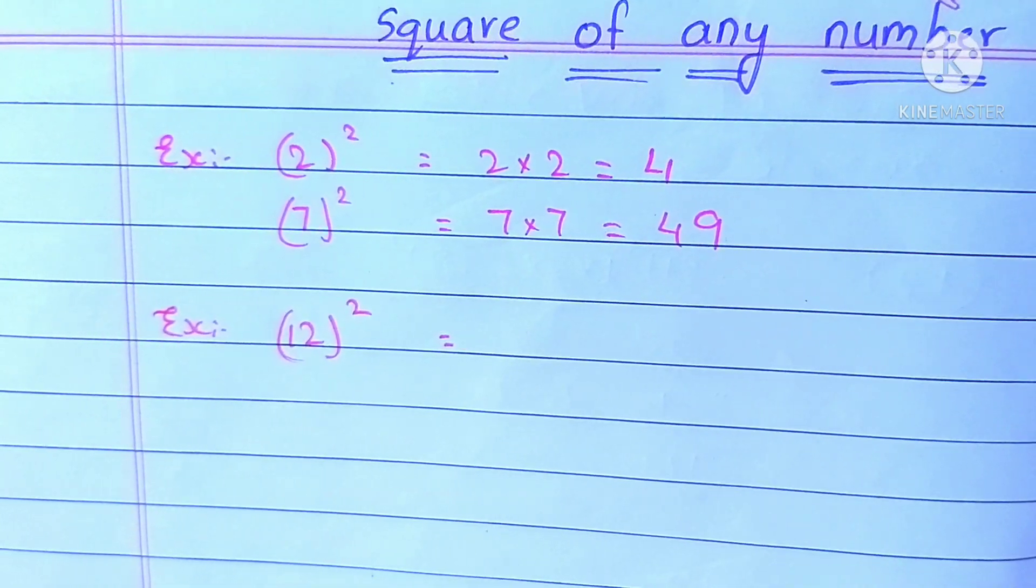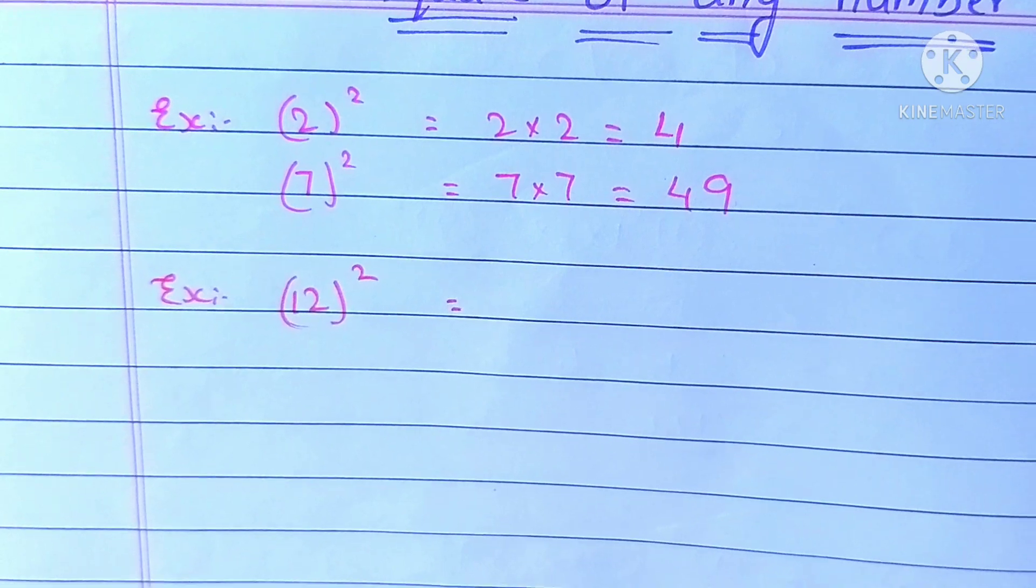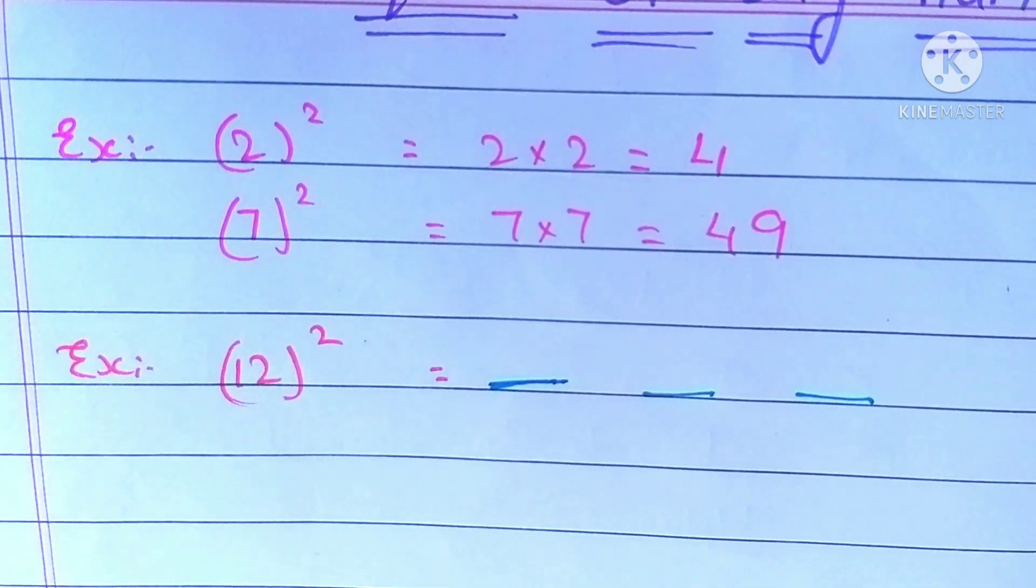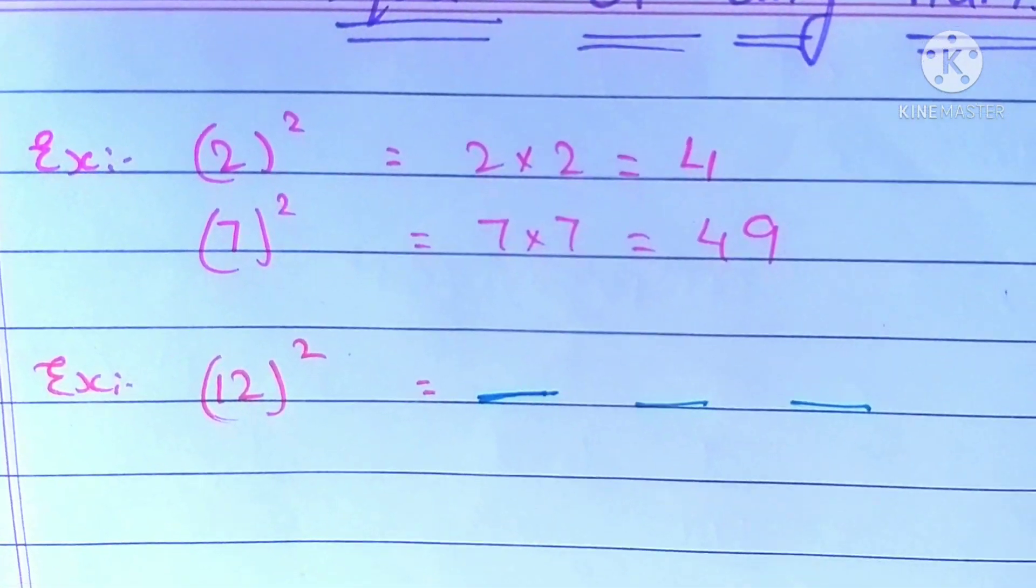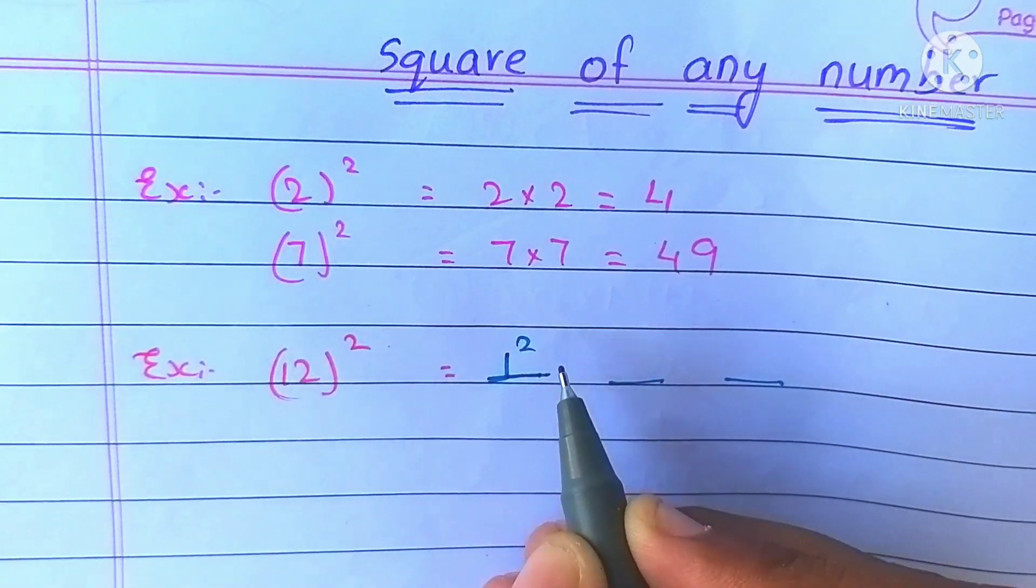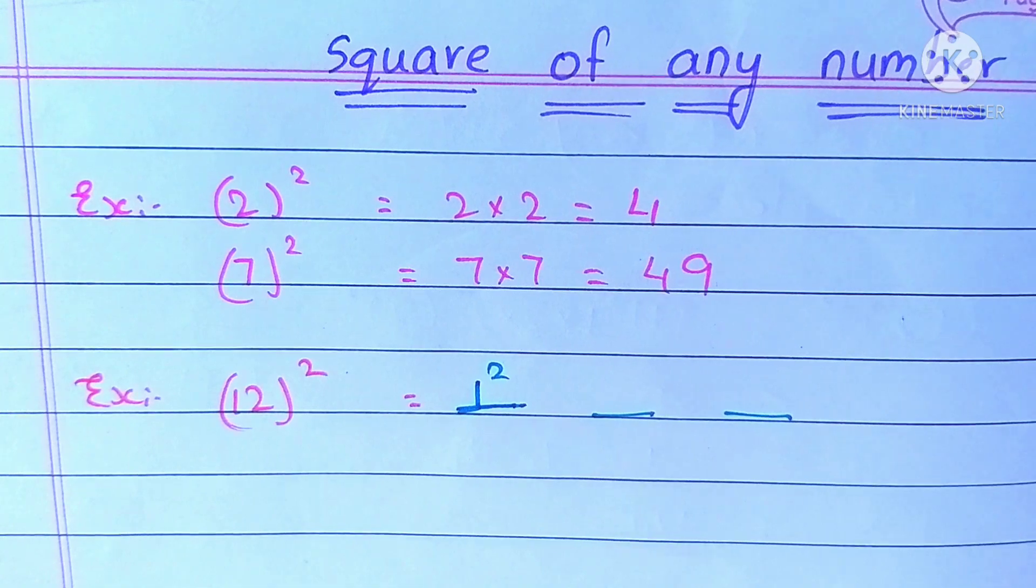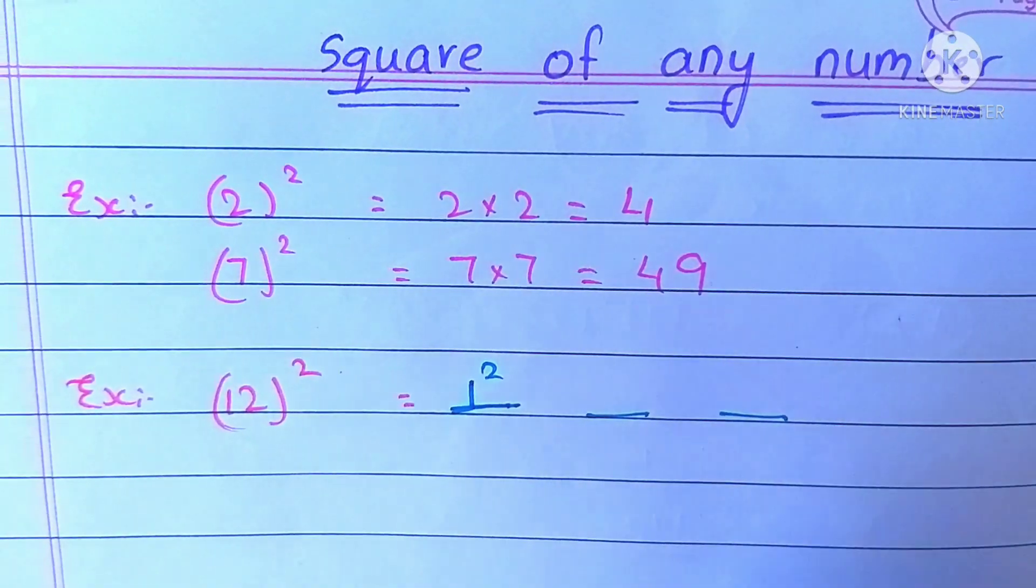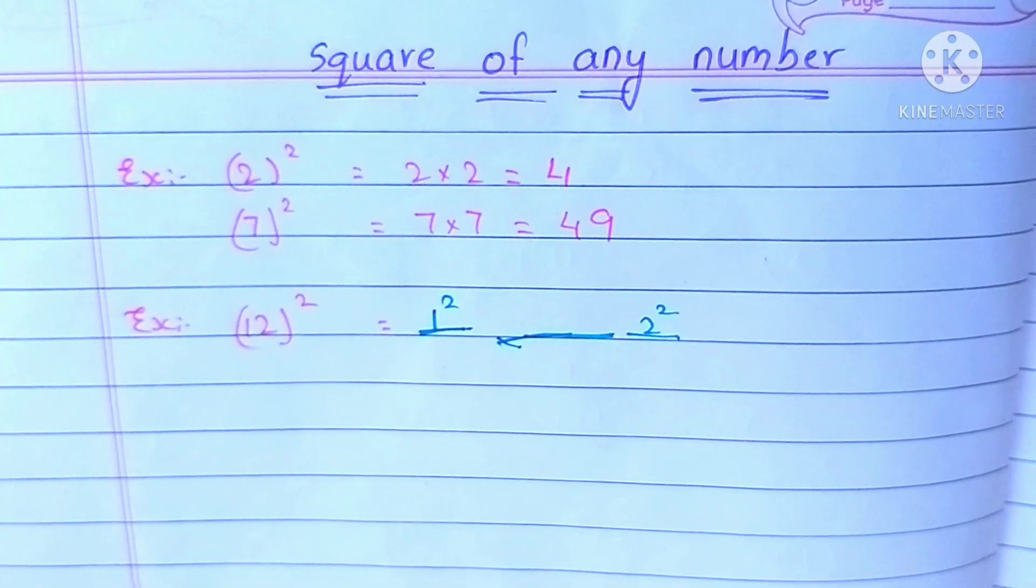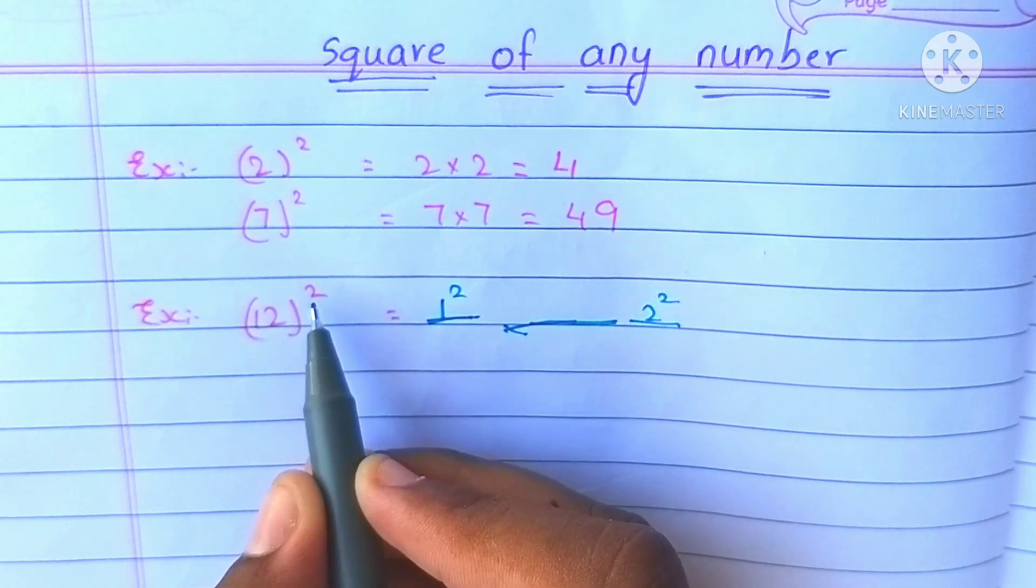To find the value of this, I divide it into these 3 parts. In the first part, we write the square of the tens place digit. In the third part, we write the square of the units place digit. In the second part, we write 1 into 2 into 2.